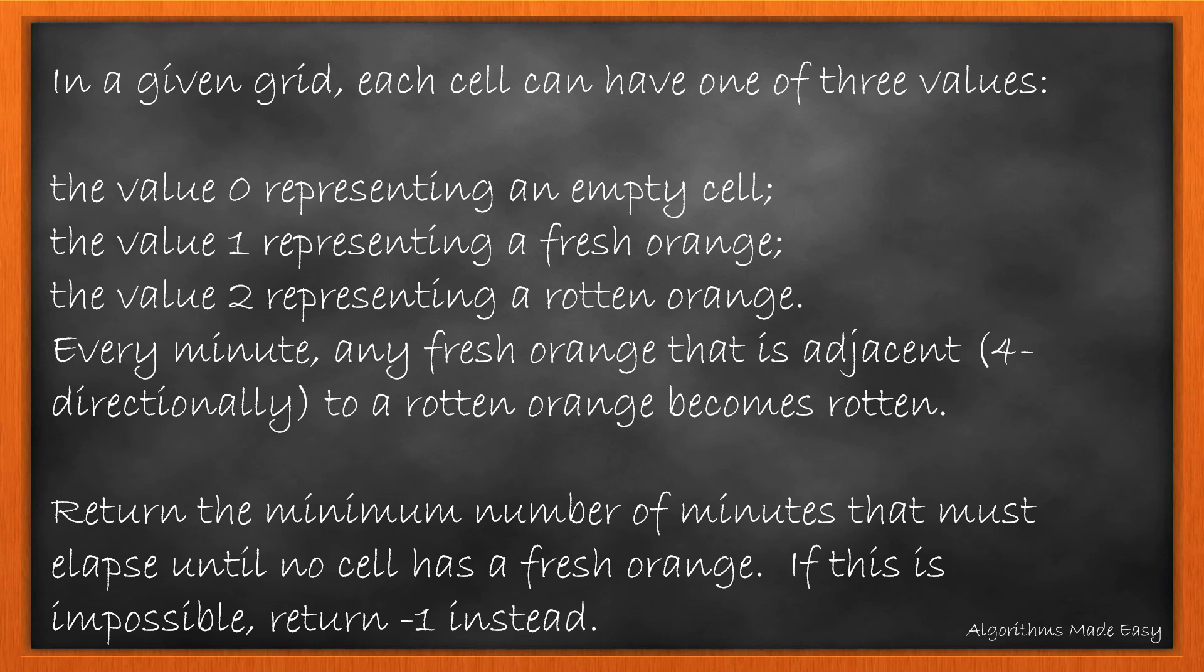In a given grid, each cell can have one of three values. The value 0 representing an empty cell, the value 1 representing a fresh orange, and value 2 representing a rotten orange. Every minute, any fresh orange that is adjacent to a rotten orange becomes rotten.